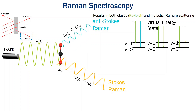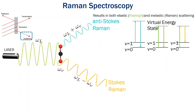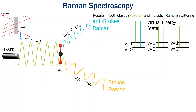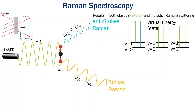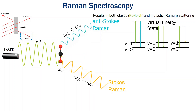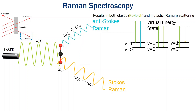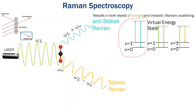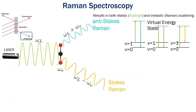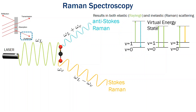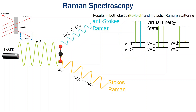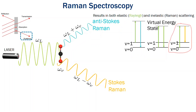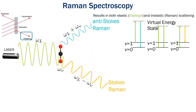There are two types of Raman scattering: anti-Stokes and Stokes shift. An anti-Stokes shift is a transition from a high vibrational energy level to a low vibrational energy level, and a Stokes shift is a transition from a low energy to a high energy level.